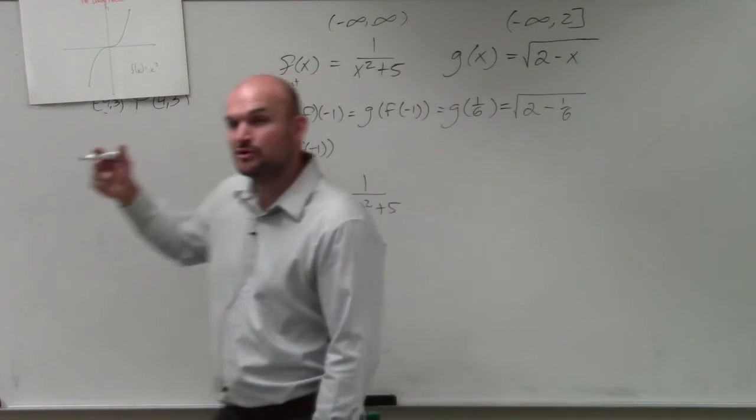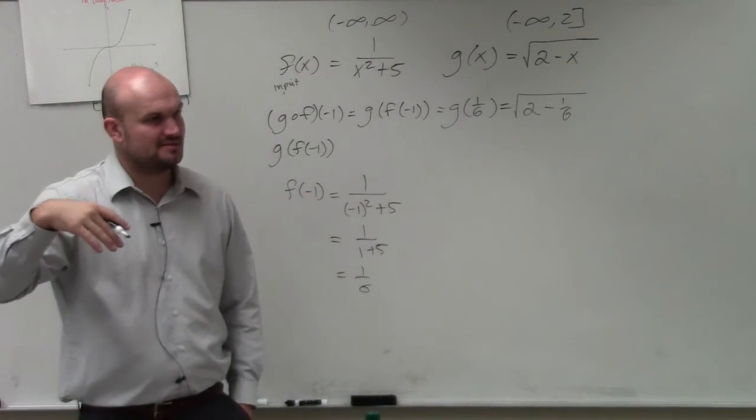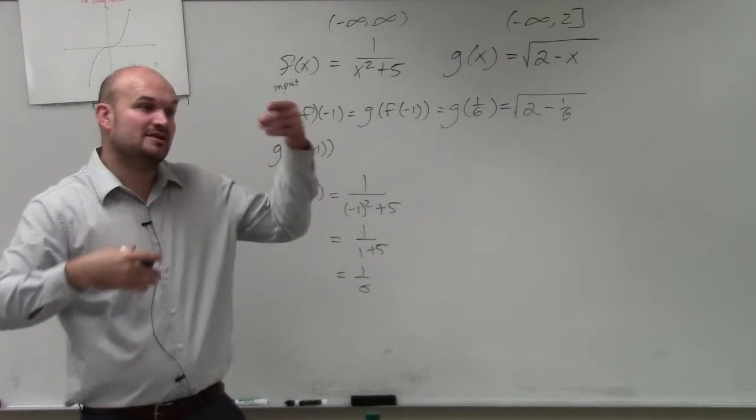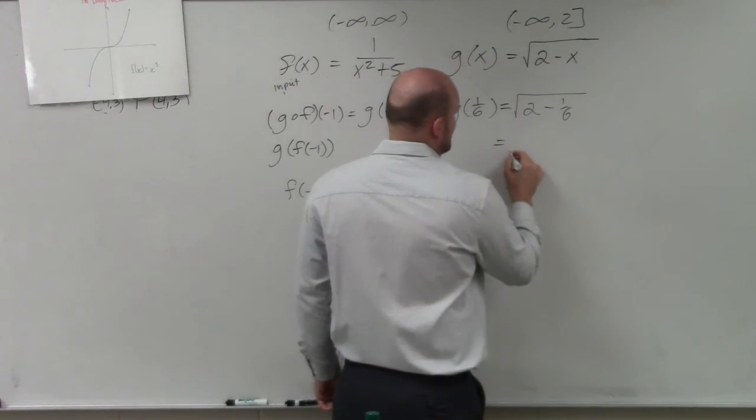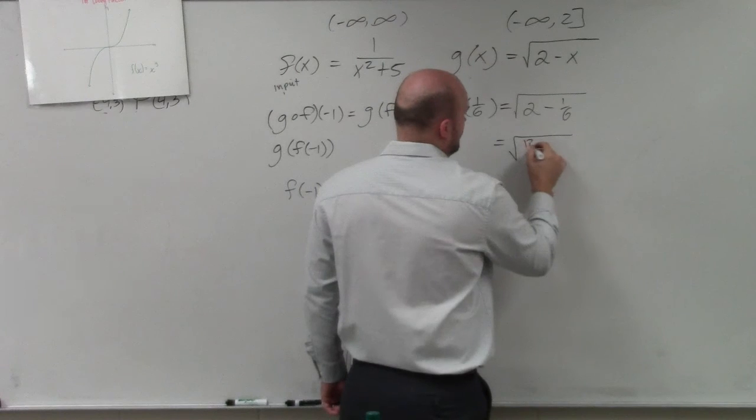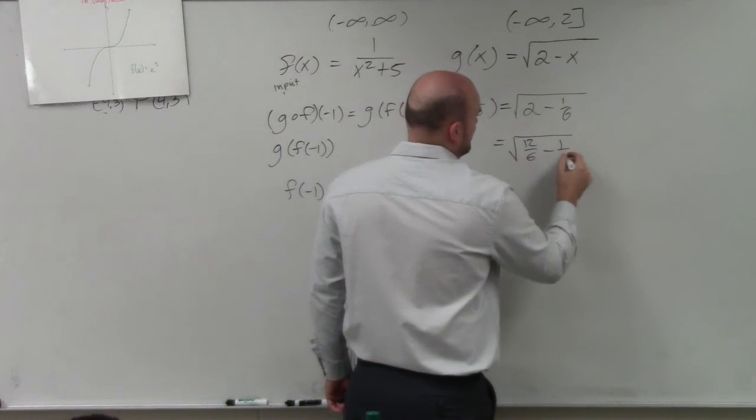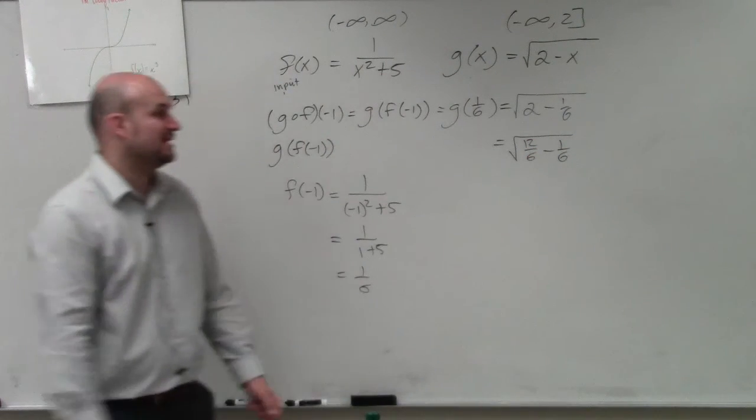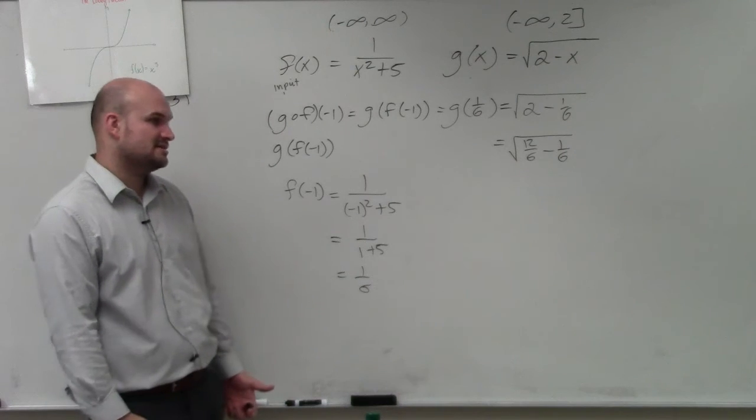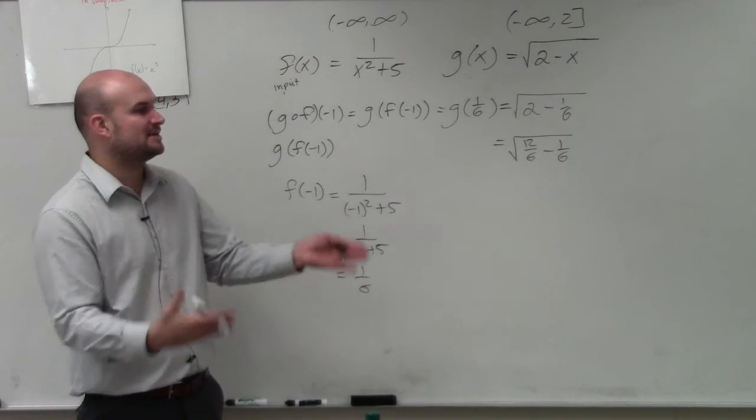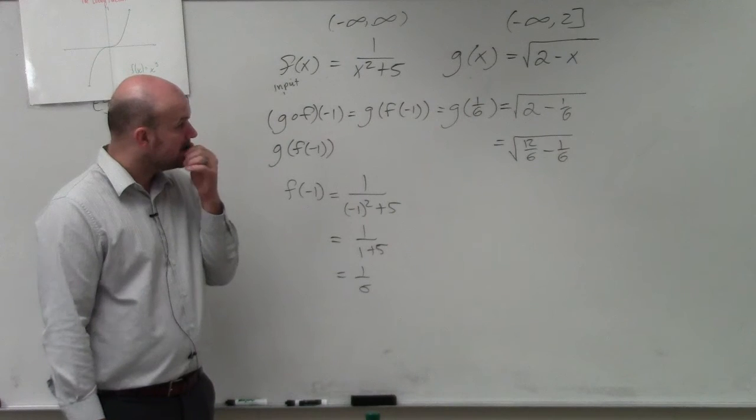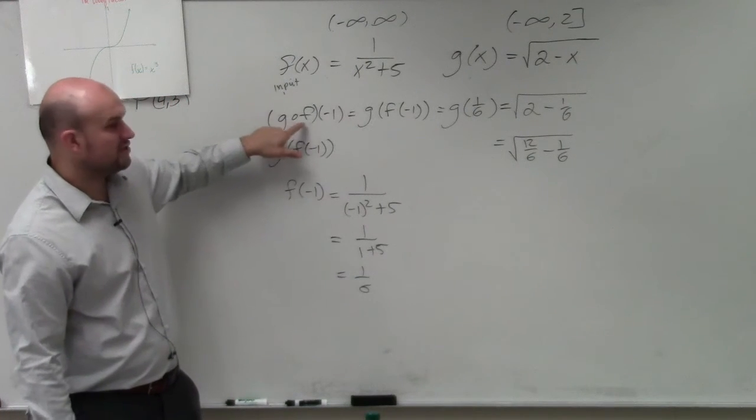Let's rewrite the number 2 with a denominator of 6. So I can multiply the numerator and the denominator by 6 over 6. I can rewrite that as 12 over 6 minus 1 over 6. Do you guys agree with me that 2 is the same thing as 12 over 6? Yes, but now I can subtract because I have common denominators.